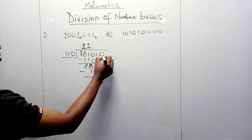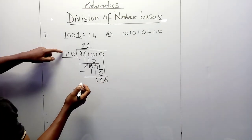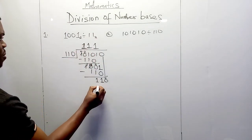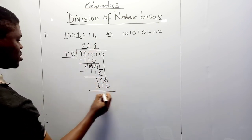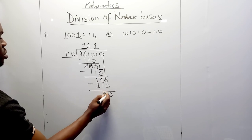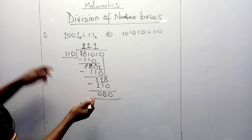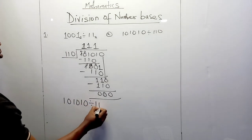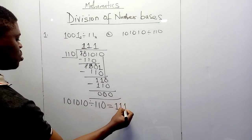We move the next digit down, making it 110, and divide by 110. That gives 1. We multiply: 1 times 110 gives 110. Subtracting: 0 minus 0 is 0, 1 minus 1 is 0, 1 minus 1 is 0. Since we now have 0 with no remainder, the answer is that 101010 divided by 110 in base 2 equals 111 in base 2.